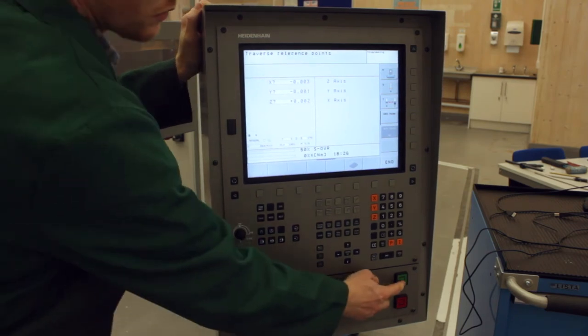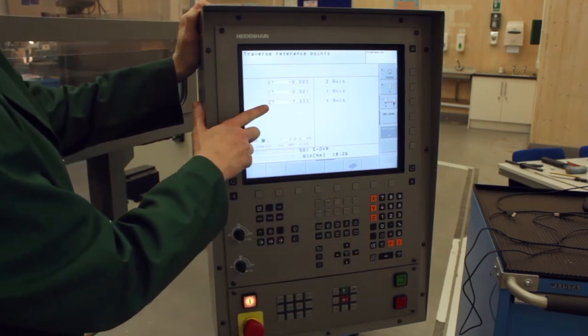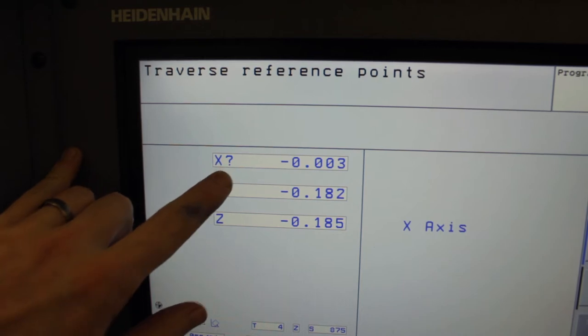To do that you're going to hit the green button and you'll need to do that three times for each of the three axes, so adjust the Z then the Y and then finally the X.